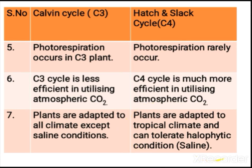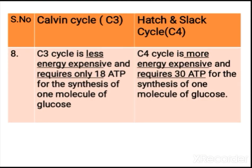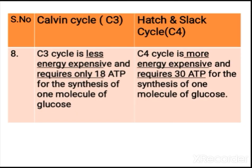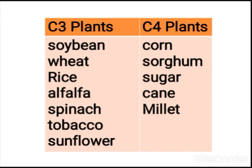Regarding energy requirements, the C3 cycle is less energy expensive — it requires only 18 ATP for the synthesis of one molecule of glucose. The C4 pathway is more energy expensive, requiring 30 molecules of ATP for the synthesis of one molecule of glucose. These are the key differences between C3 and C4 cycles.